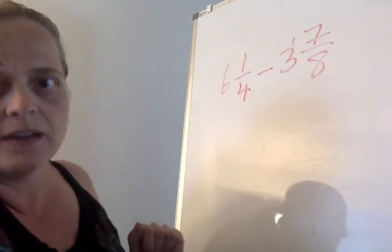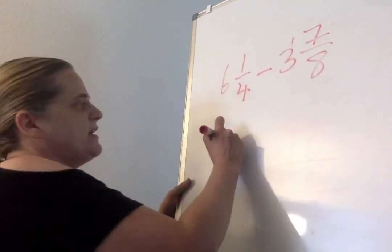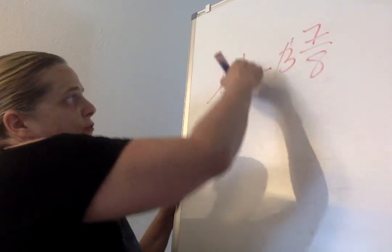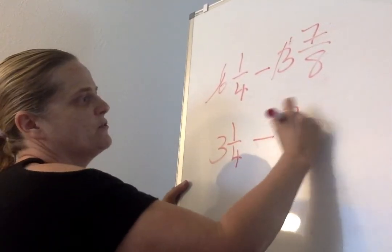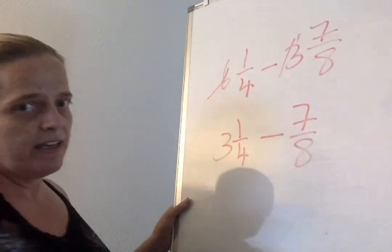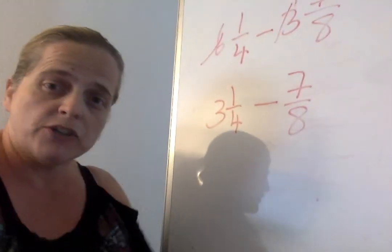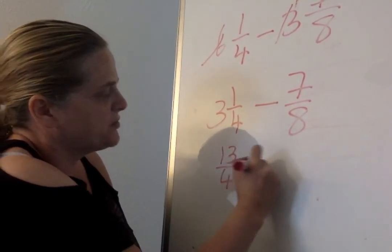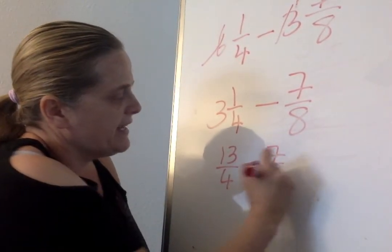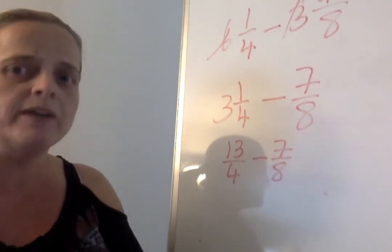What is 6 subtract 3? 3. Write 3. And now you've got 3 and write the first fraction 1 quarter. Subtract 7 over 8. Going to have to convert that 3 and 1 quarter to an improper fraction. 3 times 4 is 12. Add 1 is 13 over 4. Subtract 7 over 8. Each time you are writing the problem out.